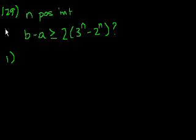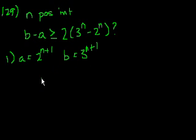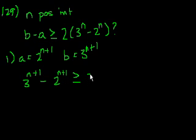Statement 1 tells us a is equal to 2 to the n plus 1, and b is equal to 3 to the n plus 1. Let's substitute this into this equation. So you get 3 to the n plus 1 minus 2 to the n plus 1 is greater than or equal to 2 times 3 to the n minus 2 times 2 to the n.